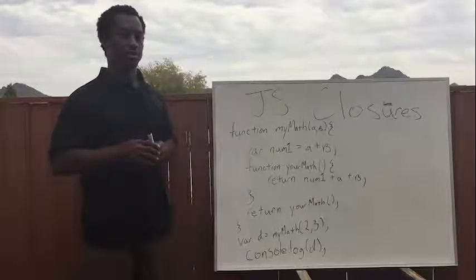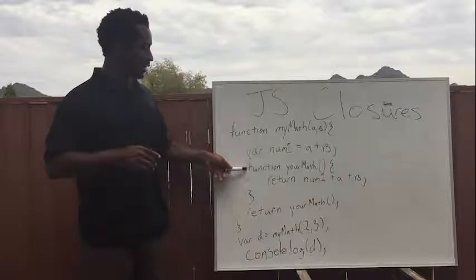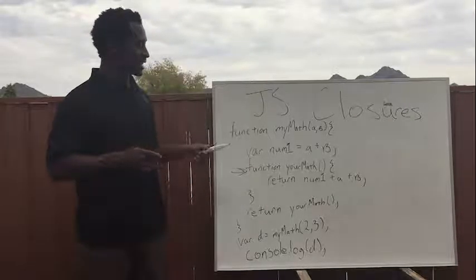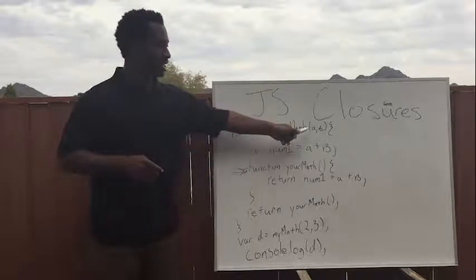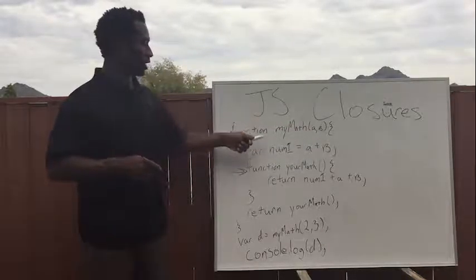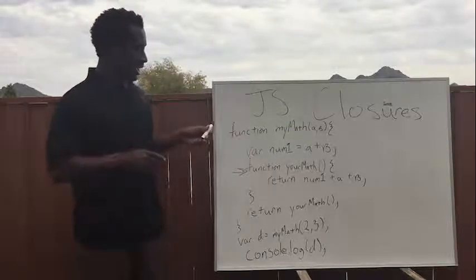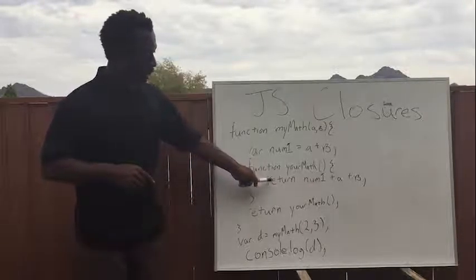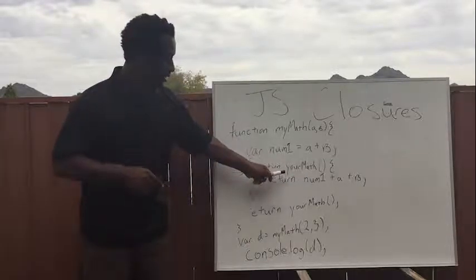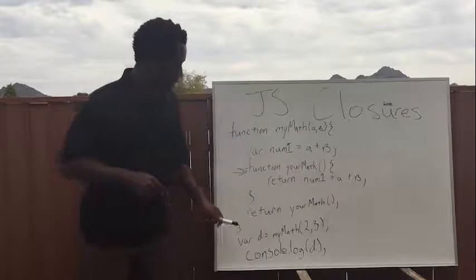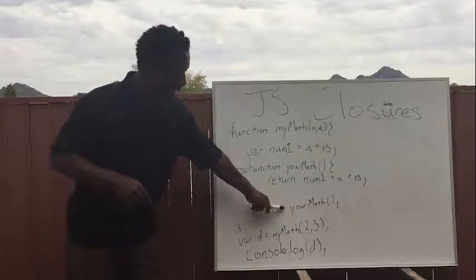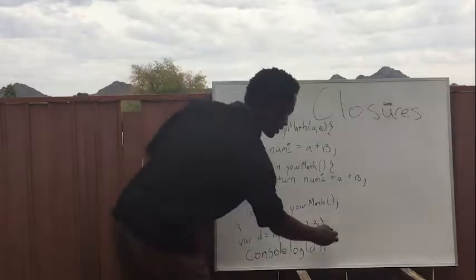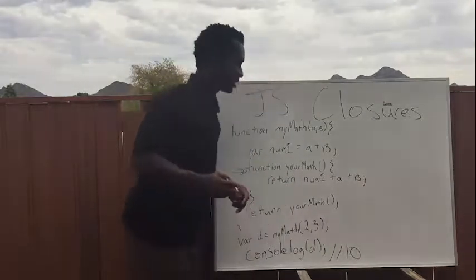So this function here is my closure and it has access to this variable num1 and the parameters a and b of function myMath. If you go through this whole function, yourMath will return num1 plus a plus b, and when I'm returning yourMath, what I end up with is 10 — the integer 10.